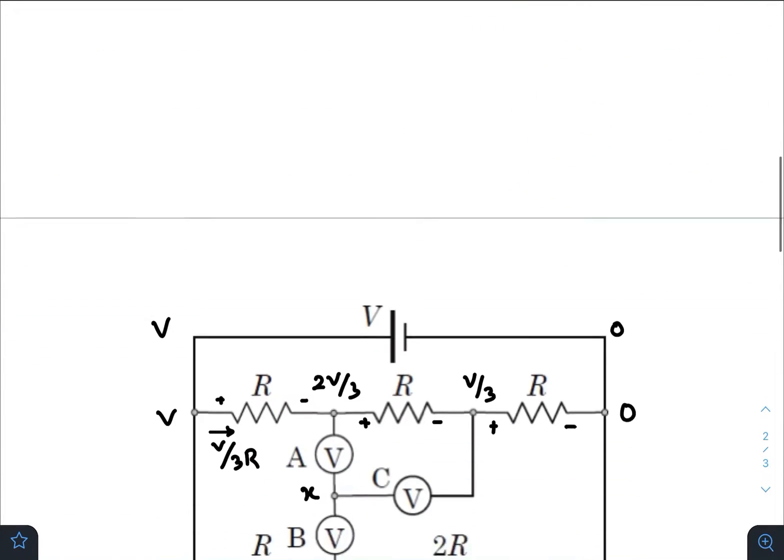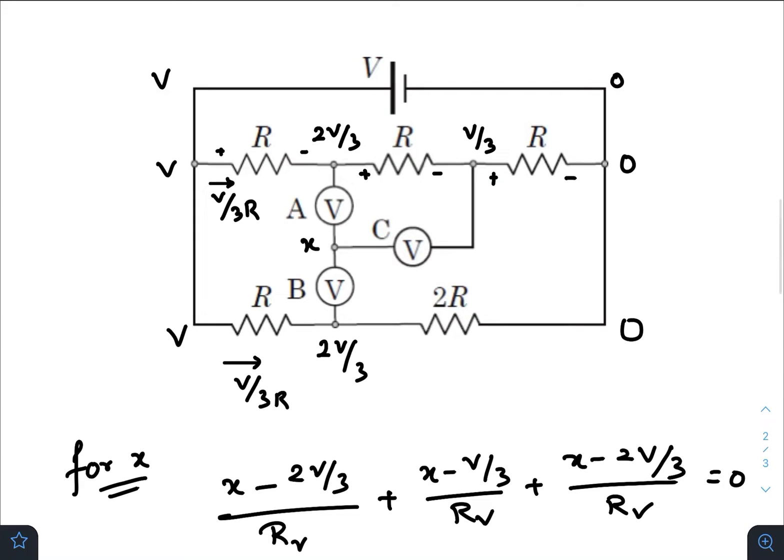the circuit diagram once again. We need to find the readings measured by these three voltmeters. Let us consider this point as the reference point, taking zero potential here. If this is zero, there will be an increase in potential by an amount V at this point. So this one will also be V, this will also be V. Now at this point the potential is V, at